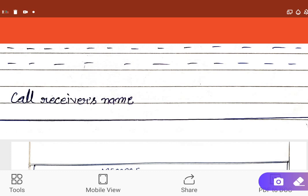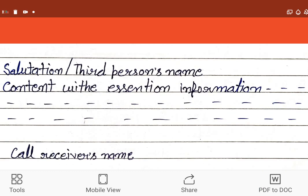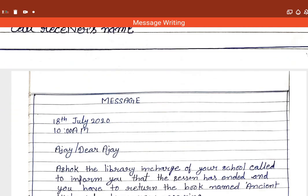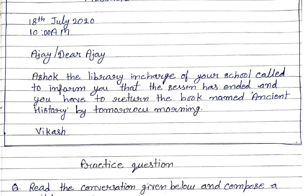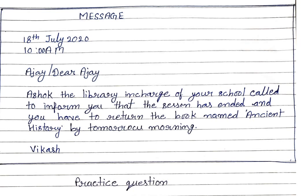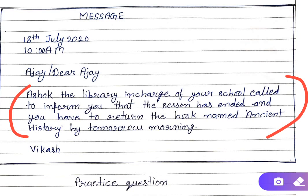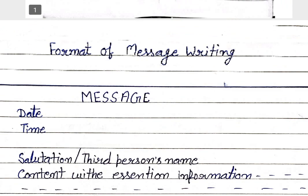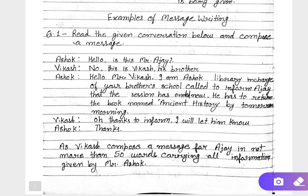After the time, we need to write the salutation — for example, dear father or dear brother. This is the heading. In this case, Vikas is writing to his brother Ajay, so he can write 'Ajay' or 'Dear Ajay' — whatever you want. After writing the salutation, you need to write the content part. As Vikas, you have received all the information from Asok, who is the library in charge of the school.